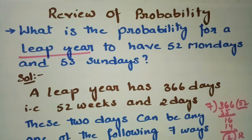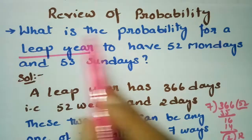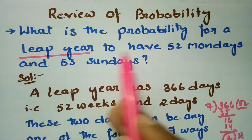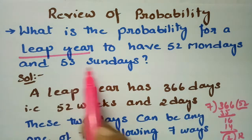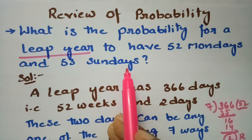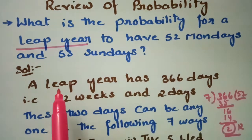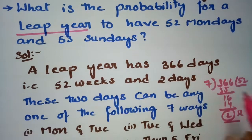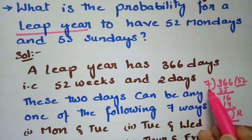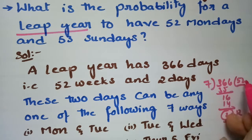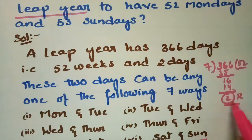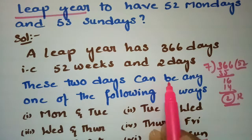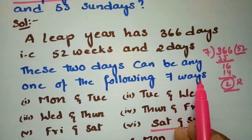This problem is on probability. We need to find the probability for a leap year to have 52 Mondays and 53 Sundays. A leap year has 366 days. If 366 is divided by 7, we get 52 weeks and 2 days left over. So these 2 extra days can be any one of the following 7 consecutive day pairs.